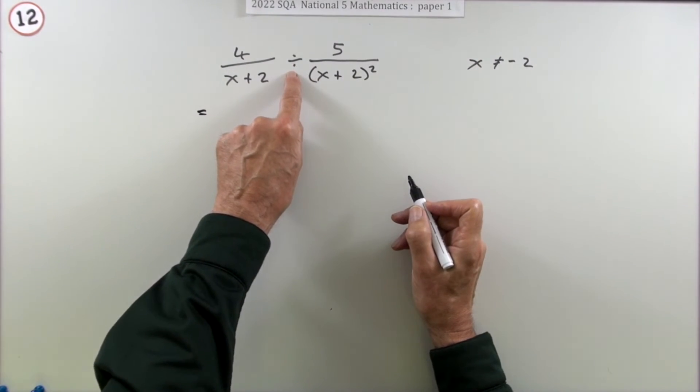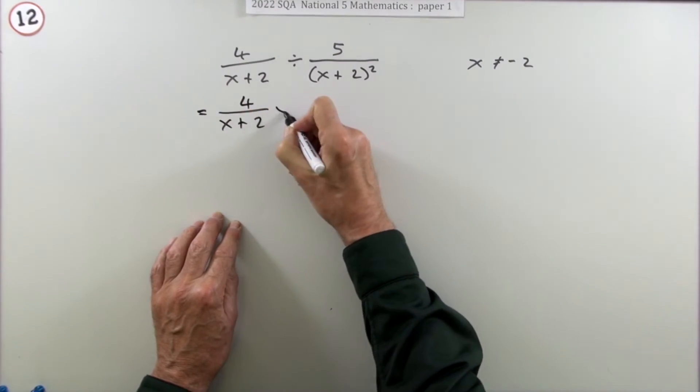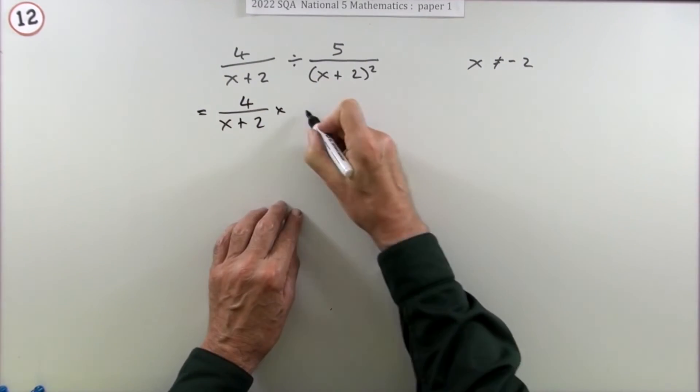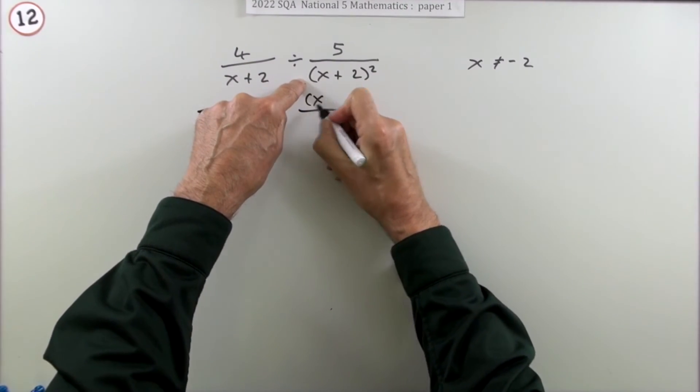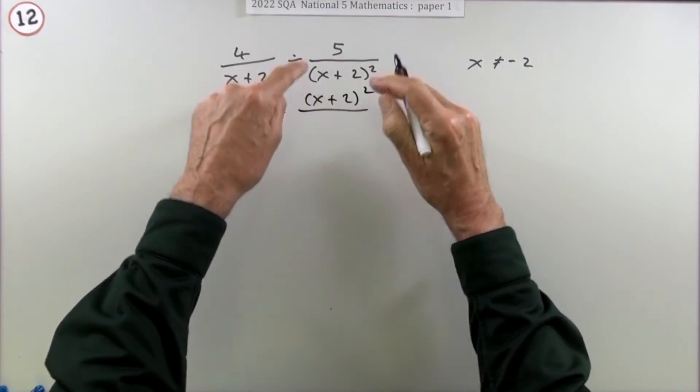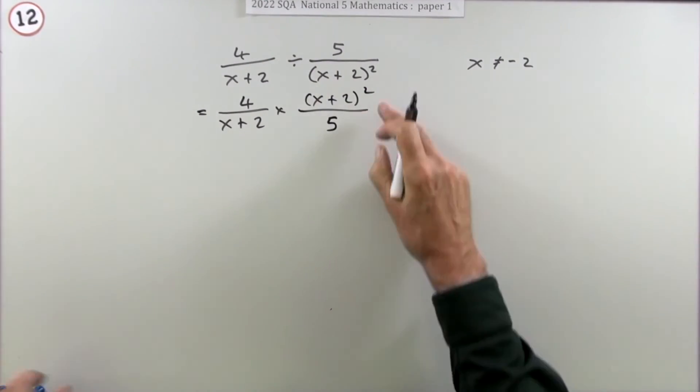Well the first step's going to be make it a multiplication. So leave that first fraction alone, that one's fine, but instead of dividing by this, multiply by its reciprocal. So the denominator which was x plus 2 squared now becomes the numerator, and the numerator 5 now becomes the denominator. Doing that gets a mark.